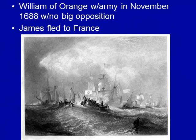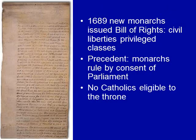William of Orange's army arrives on bird ships, transports, and with his navy. They arrive in November of 1688. There is not much opposition. James flees to France.